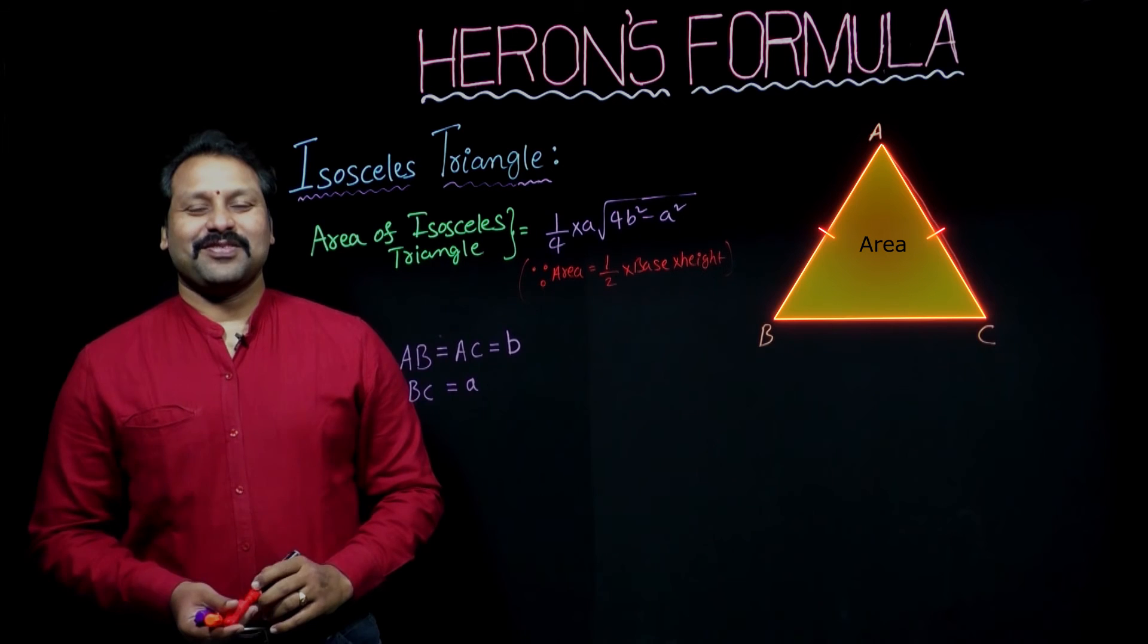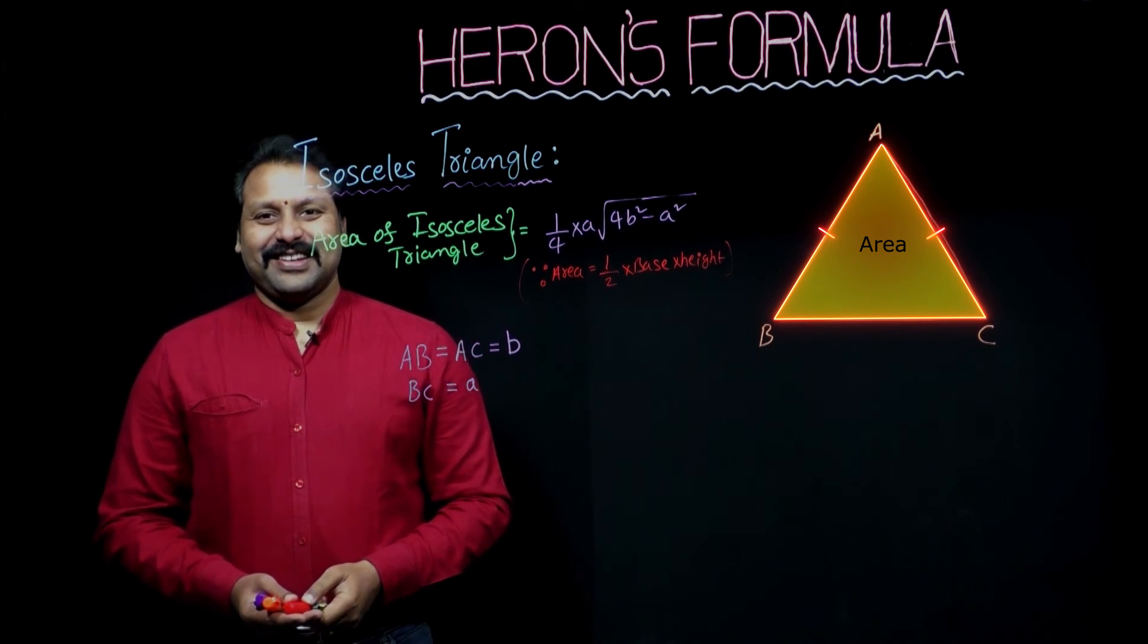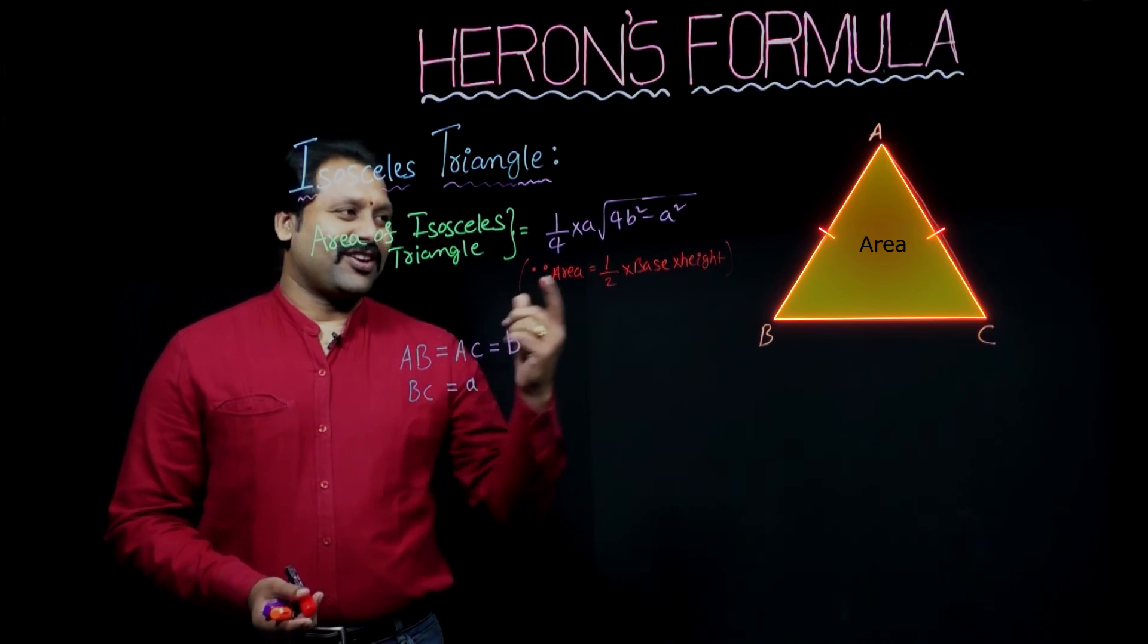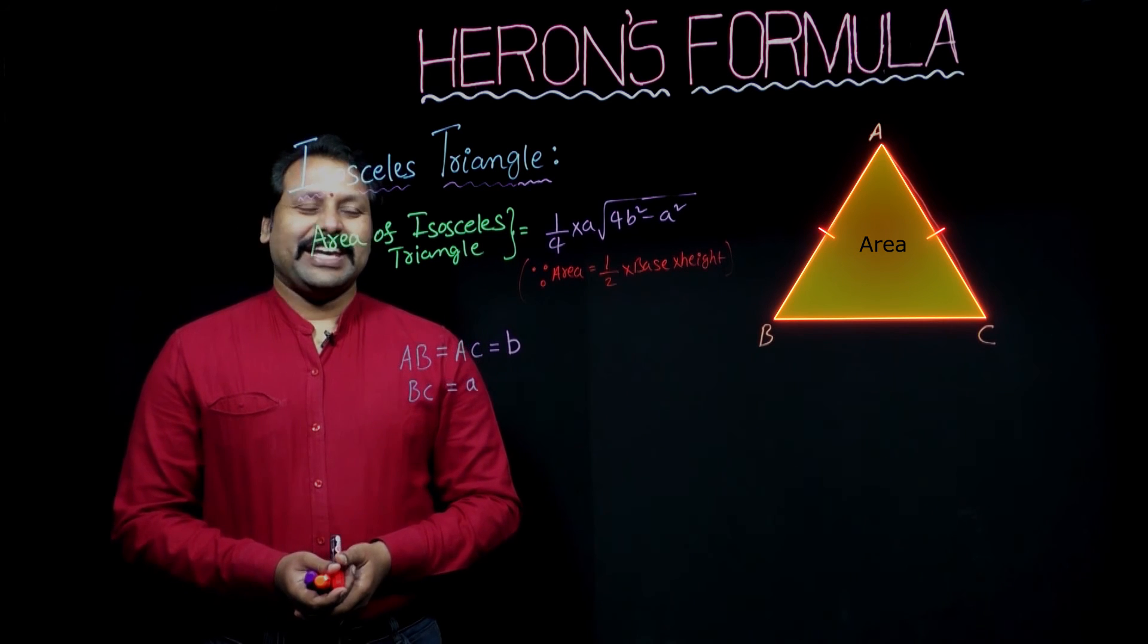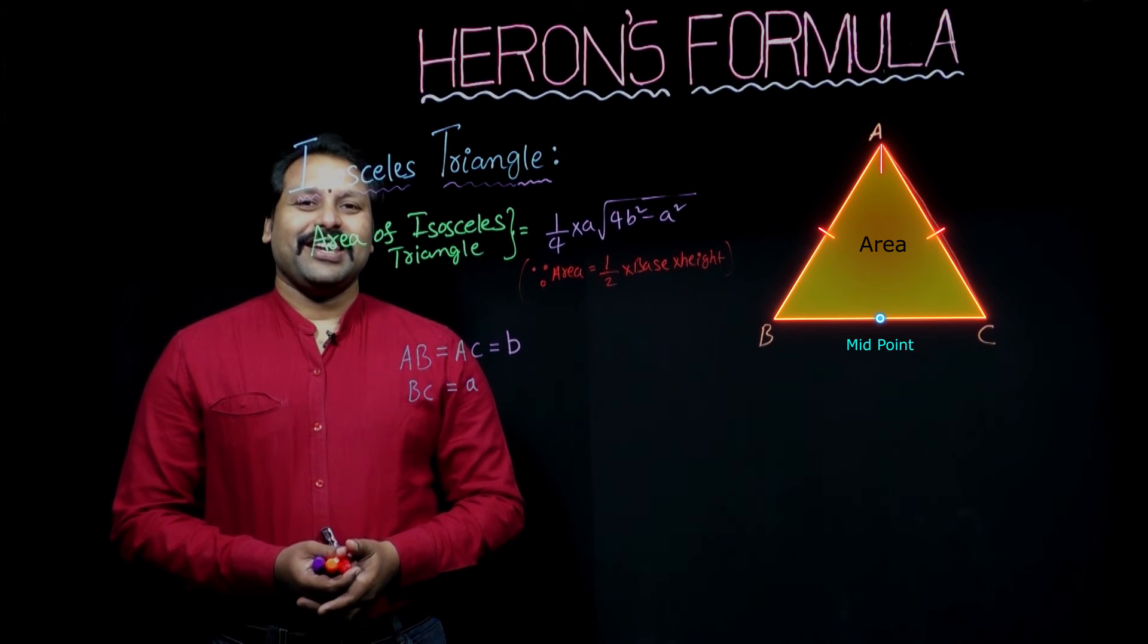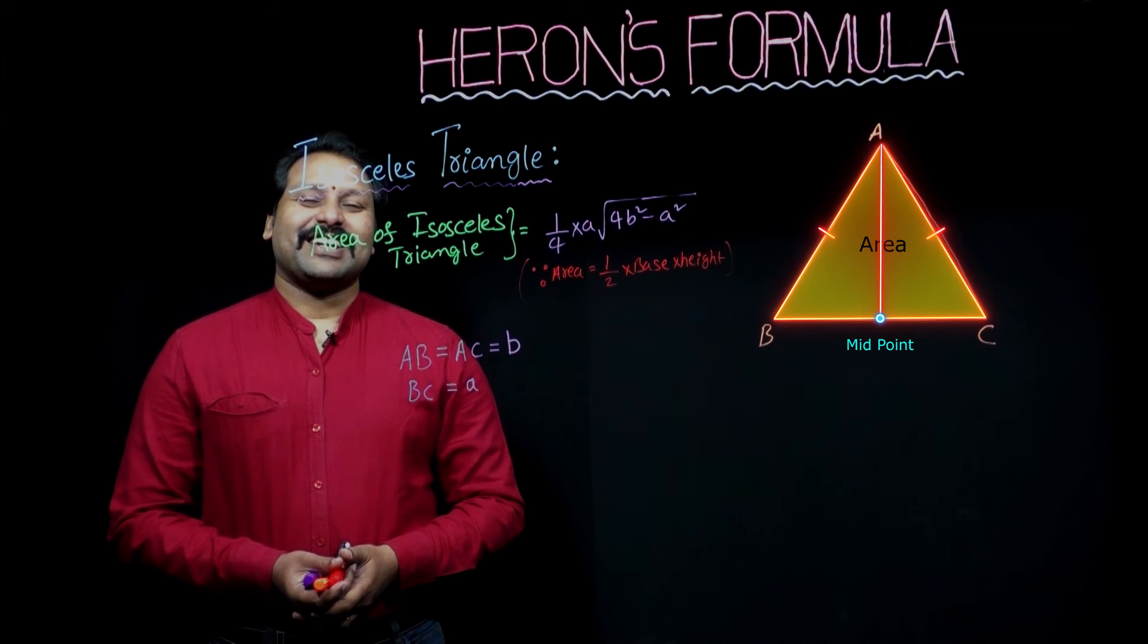In previous video, that is equilateral triangle, how to find the area, we have discussed it there. The similar model. Here also, take the midpoint of BC and line joining the midpoint of BC and vertex A.